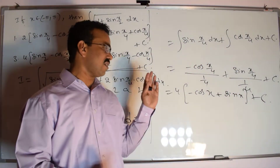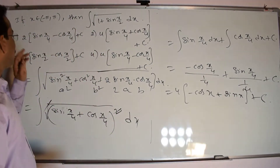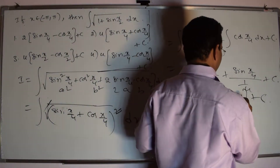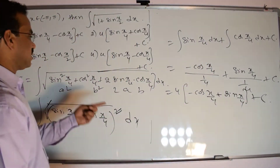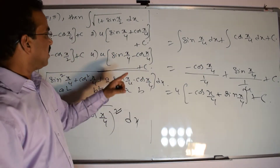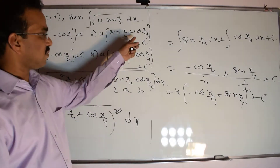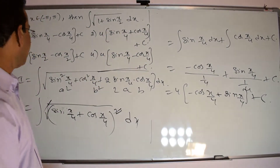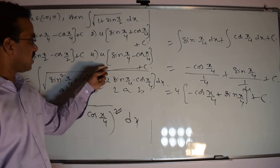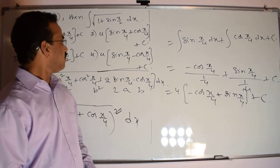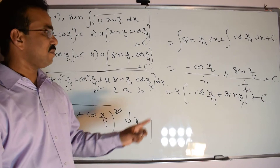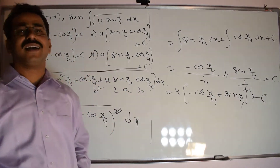Let's compare with our options. The first option has a 2, which is wrong. The second option has 4·sin(x/4) and minus cos(x/4), which is incorrect. The third option has x/2, which is also wrong. The last option has 4·(minus cos(x/4) plus sin(x/4)) plus C — yes, exactly. Option 4 is correct.